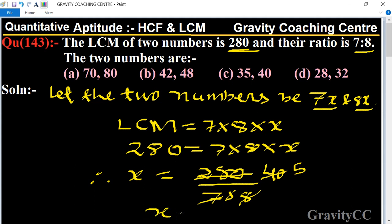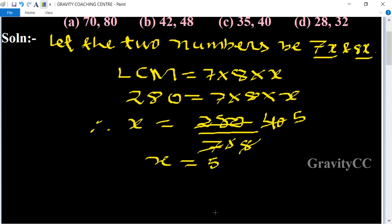Hence, the two numbers are 7x and 8x. 7x equals 7 into 5, and the other number is 8x. 8 times 5 - 7 times 5 is 35 and 8 times 5 is 40.